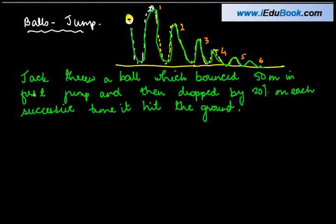What the question says is that as Jack had thrown this ball, the first time it bounced 50 meters, the next time there was a drop of 20%, then the next time there was a drop of 20%, keeping in mind whatever height it achieved in case number 2, and so on.